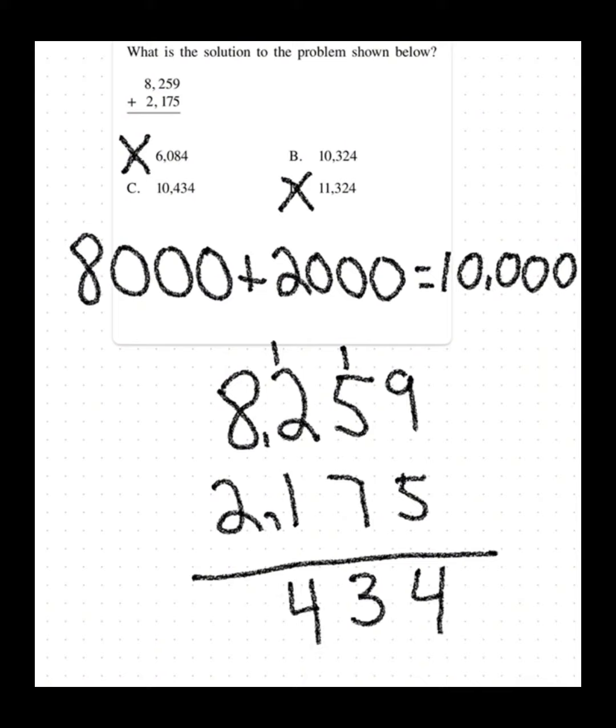3 below, carry the 1. 1 plus 2 plus 1, 4. No need to carry over. 8 plus 2 equals 10. So our answer is 10,434.